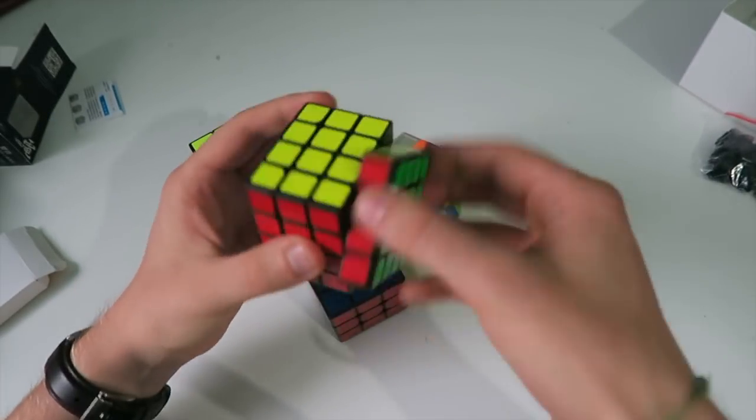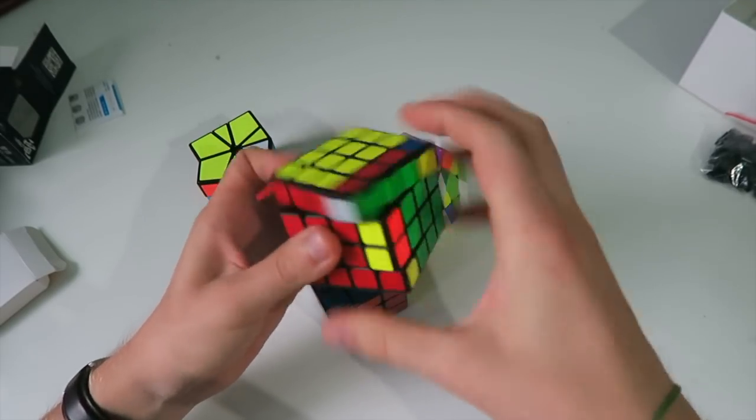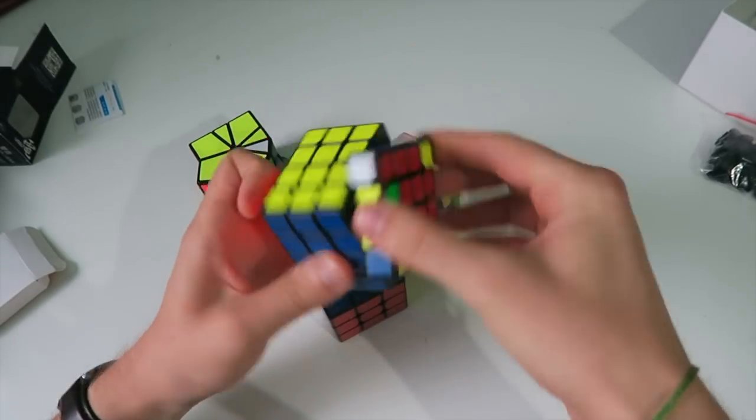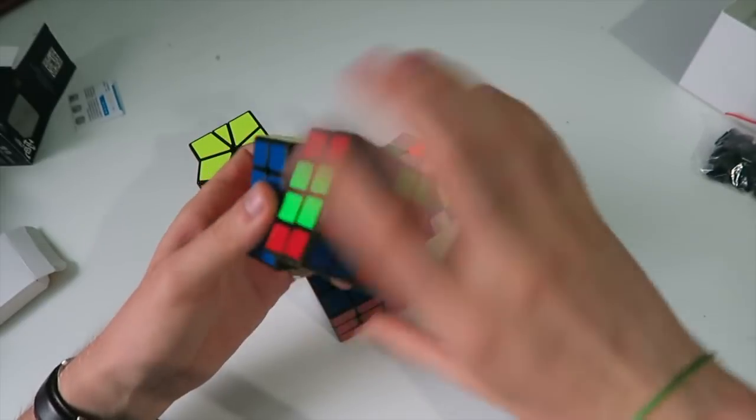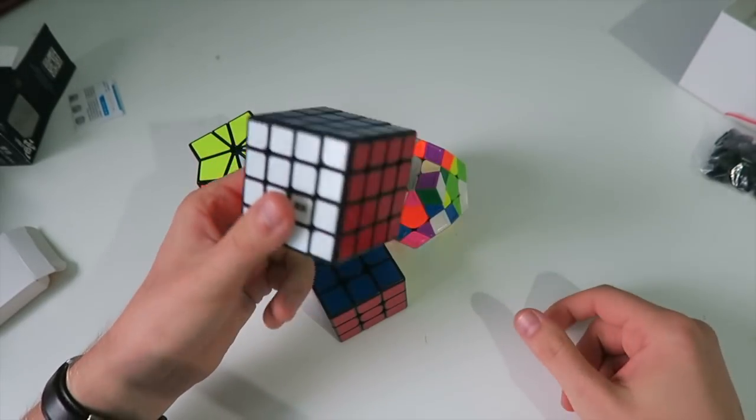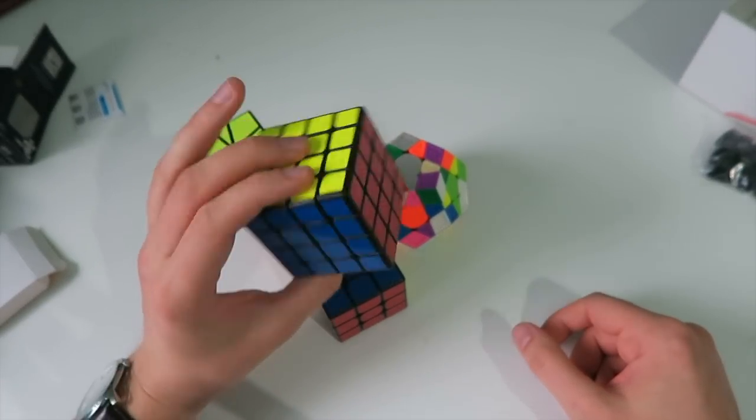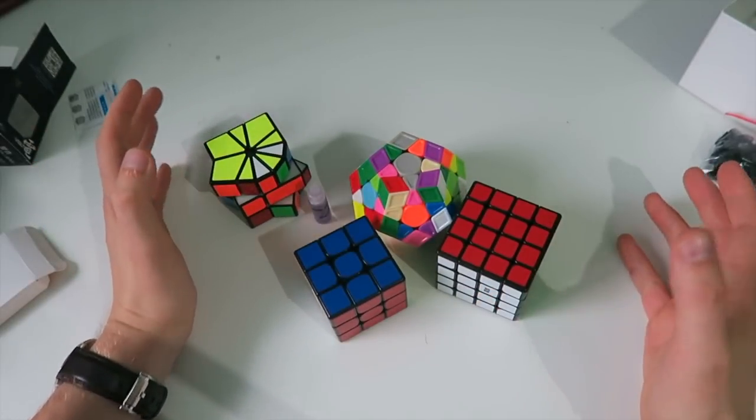I also bought this which is the Moyu Aosu GTS 2M. I'm going super hard with the magnets at the moment, so yeah, lots of magnetic puzzles. I really want to do well in 4x4 at Leeds, so I've been practicing a lot more. Got myself a new 4x4 and that's it.